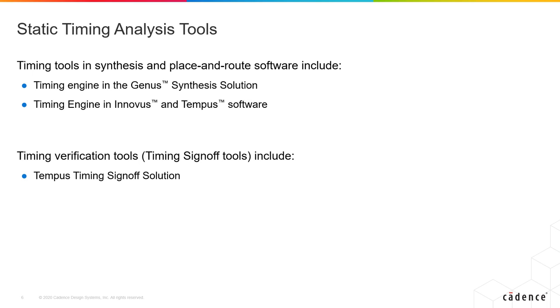These timing verification tools typically sign off on all the different timing checks and constraints, whether the design is meeting the specifications or not. The timing tools or timing engines in Synthesis and Place and Route often try to calibrate themselves to make sure that they correlate well with the timing verification tools.